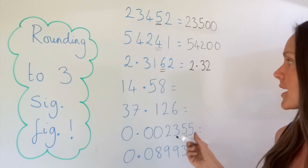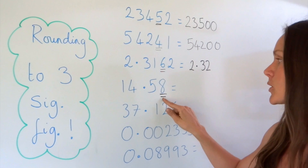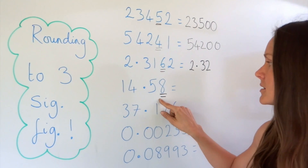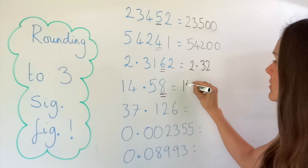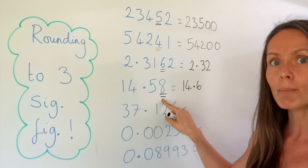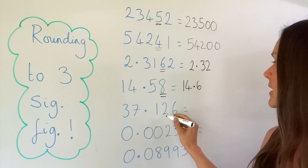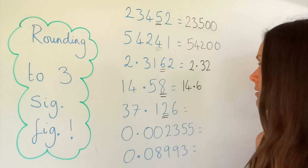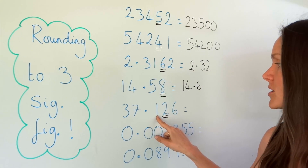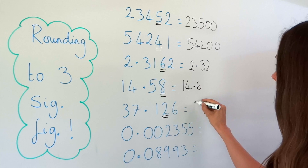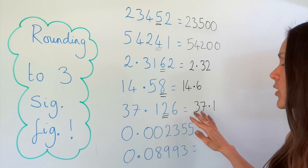Now onto number four. Check the fourth one to see if it rounds the third one up — and it does, because this number is bigger than five, so this rounds up to six. So we've got 14.6. Just like in the example before, because this number is after the decimal, we don't need to write a zero. For the next example, I checked the fourth figure and the number two doesn't round this number up, so it stays the same. This one is just left as 37.1. Because they're after the decimal, we don't write extra zeros — we just leave it like that.